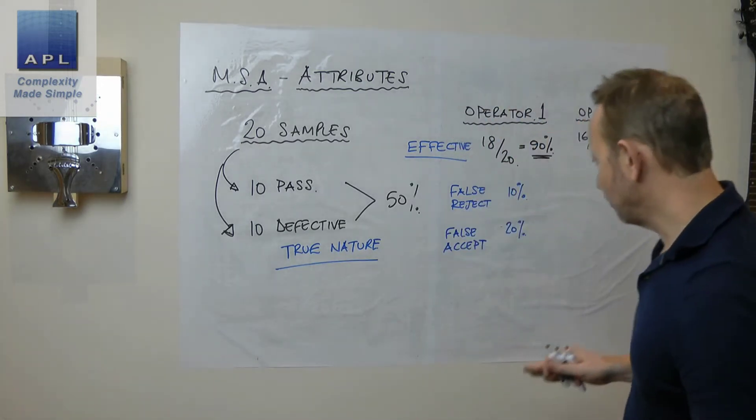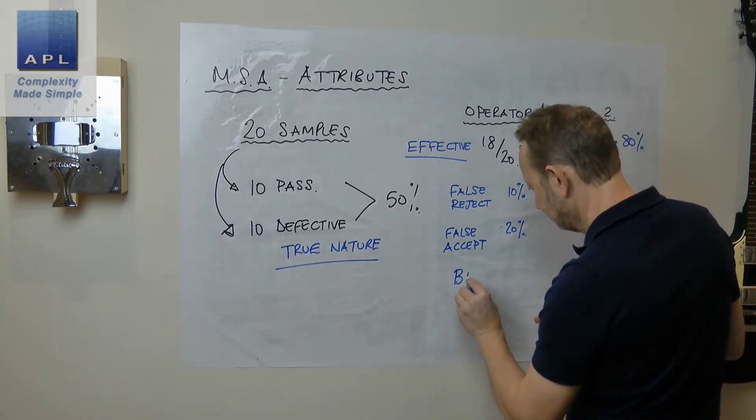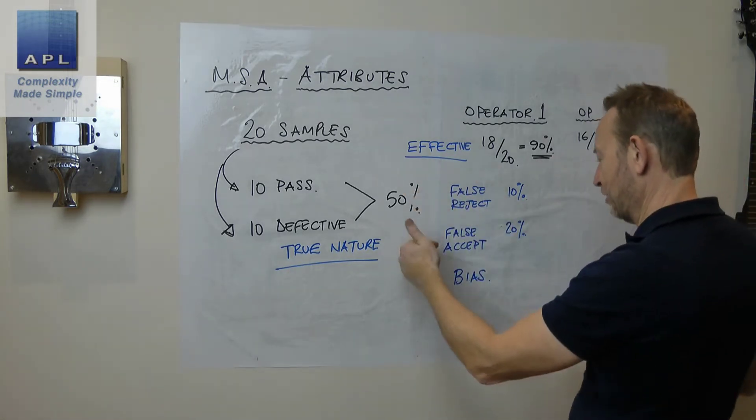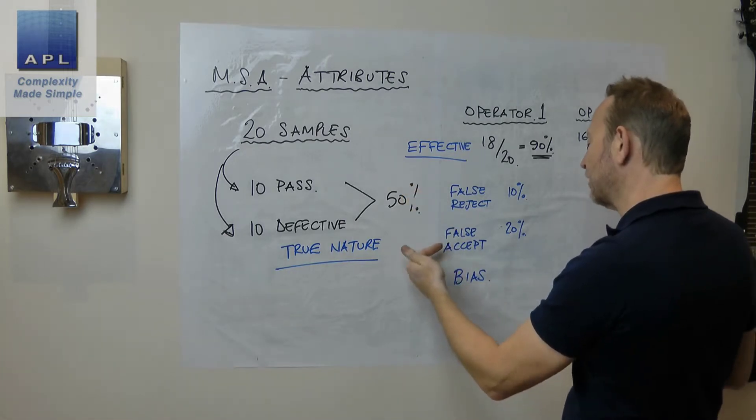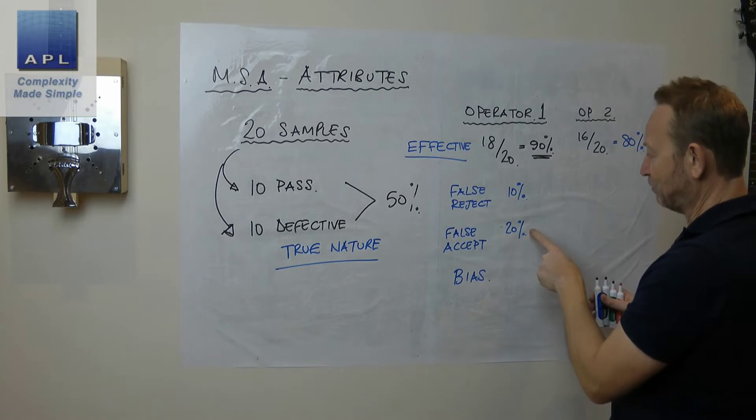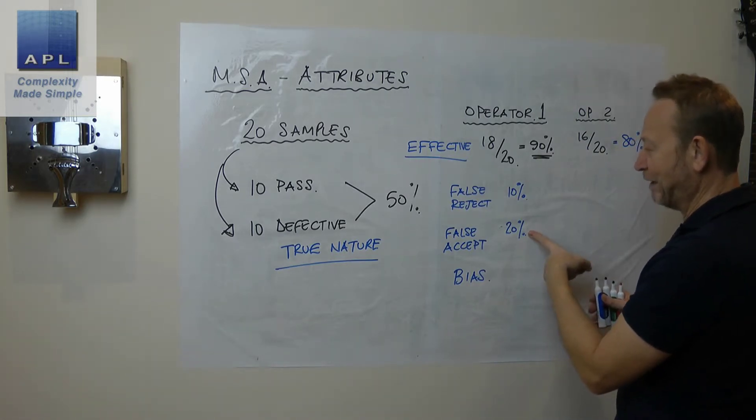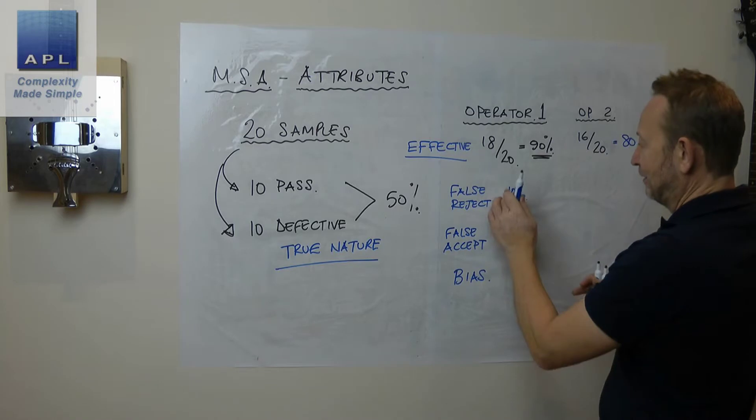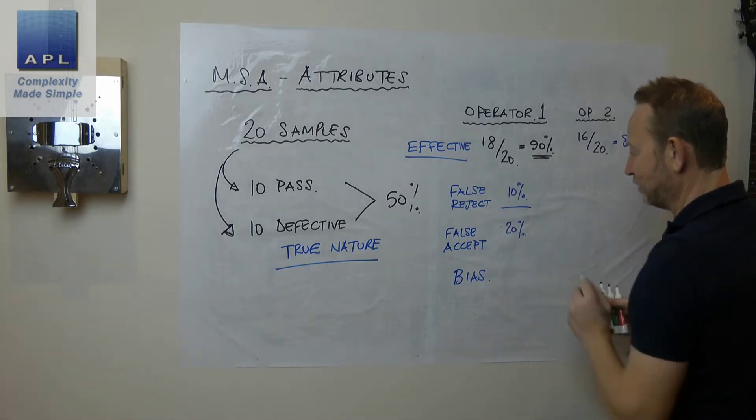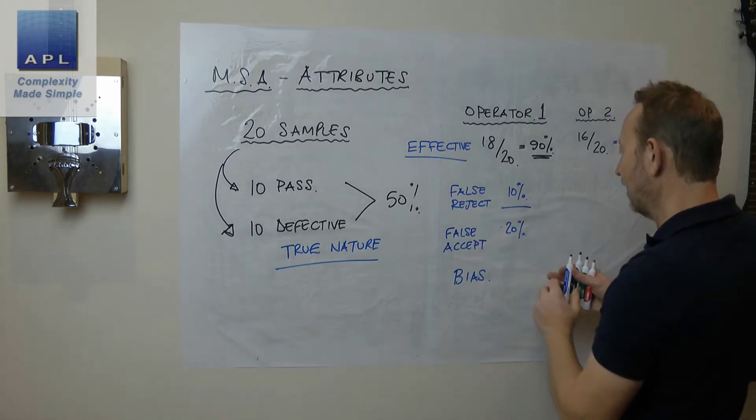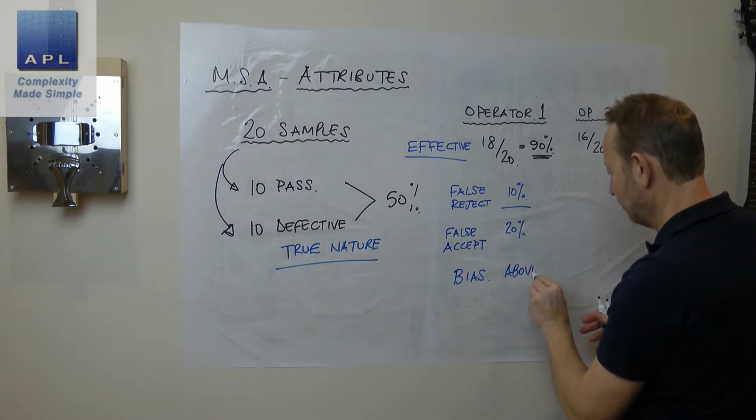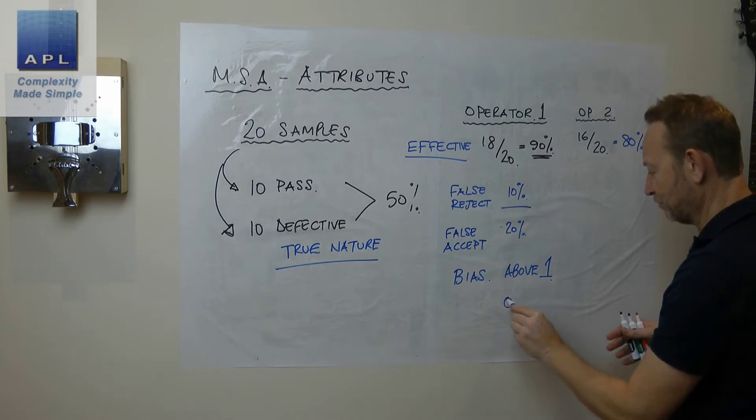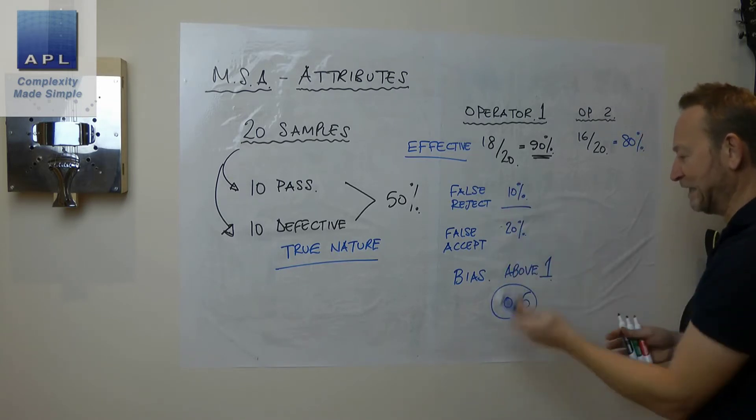And then the final number that you work out is the bias. Now the bias is which way are we biased here? Are we too tight or are we too loose? Now you can see here that we're accepting more mistakes. So we're actually too loose. So you look at these two and often what people do is they divide one by the other. And you want the bias to be above one. Now in this case, we're below one, we are at 0.5. So the bias would be going in the wrong direction.